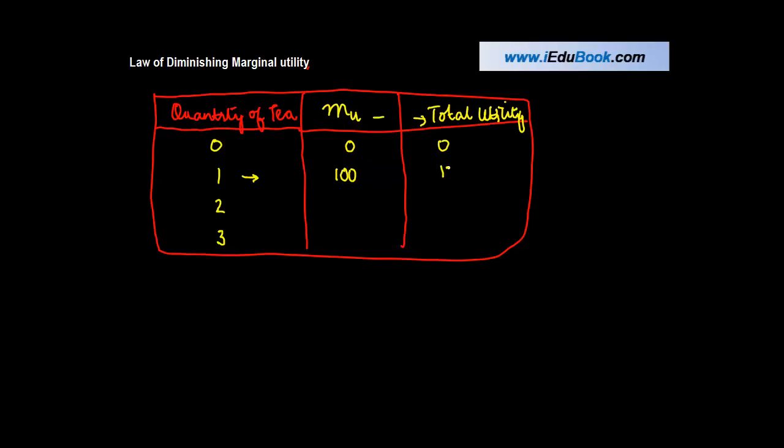Therefore, the total utility was 100, which is the sum total. When he consumed the second cup of tea, he got 80 units of utility from this cup, so the total became 100 plus 80, which is 180. When he consumed the third cup, he got 60 units of utility, so the total utility became 180 plus 60, or 240.